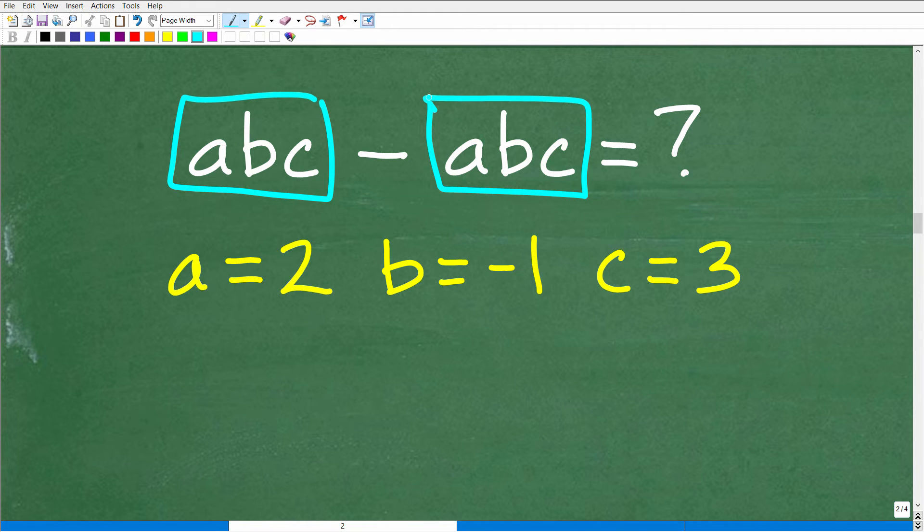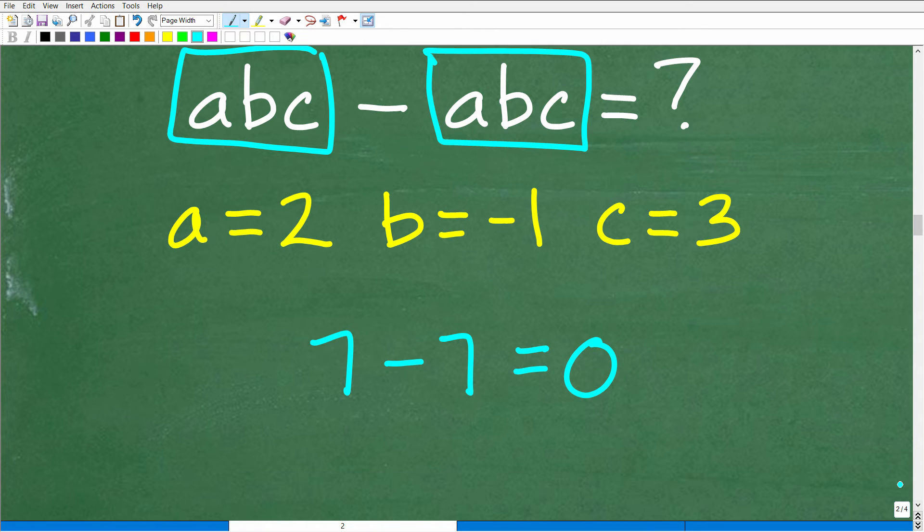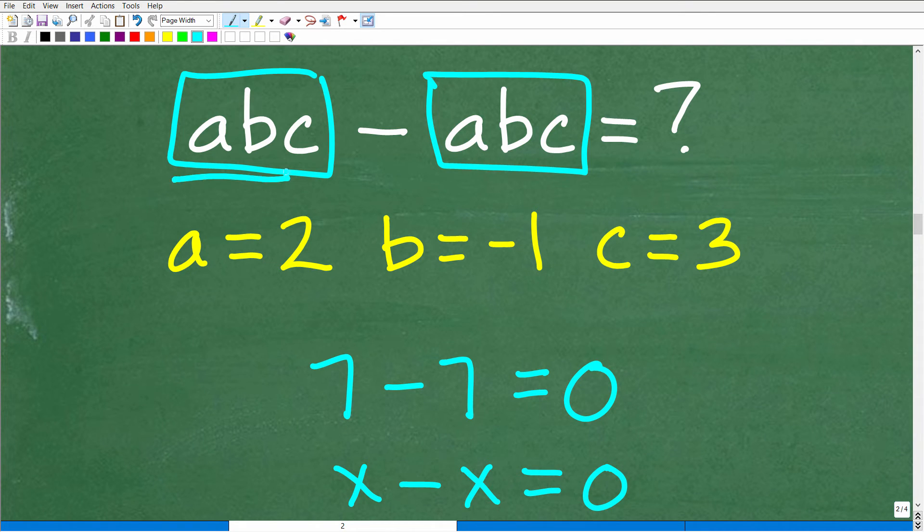But really what we're doing is taking one thing and subtracting it from itself, okay? Anytime you subtract something from itself, like 7 minus 7, what's the answer? It's 0, okay? If you have x minus x, the answer is 0. So hopefully you said, oh, well, it's this thing subtracting from itself, so the answer is 0. We didn't have to do all this plugging in and number crunching. Now, if you did it that way, that's perfectly fine because that's typically what you do when you're evaluating variable expressions.